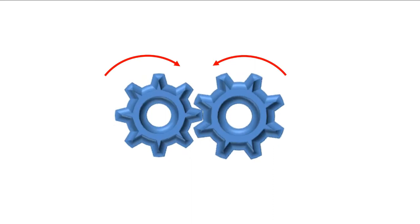Meshed gears are called gear trains. A gear train consists of two or more meshed gears. When we say a car is in gear, it means the gears are meshed. Simple gears like this are also called spur gears, as mentioned earlier.